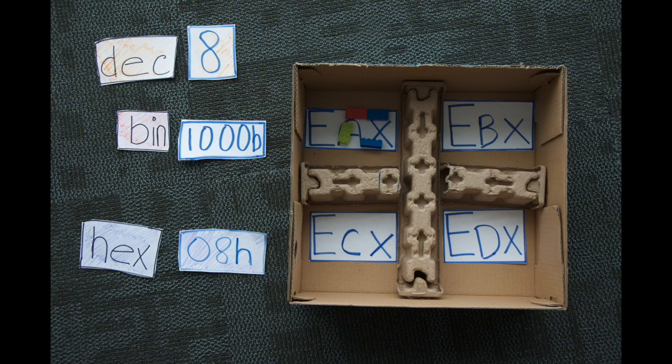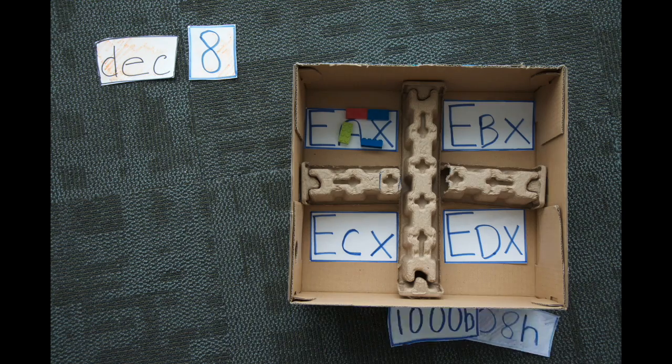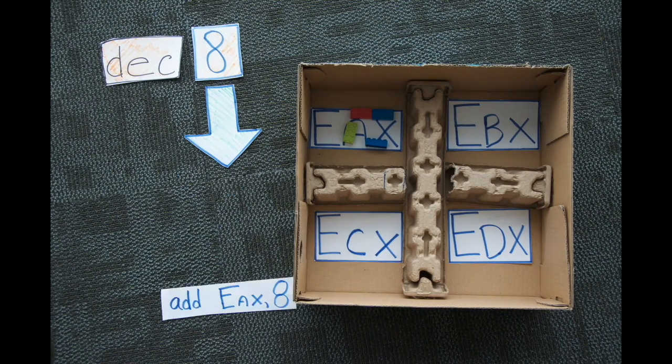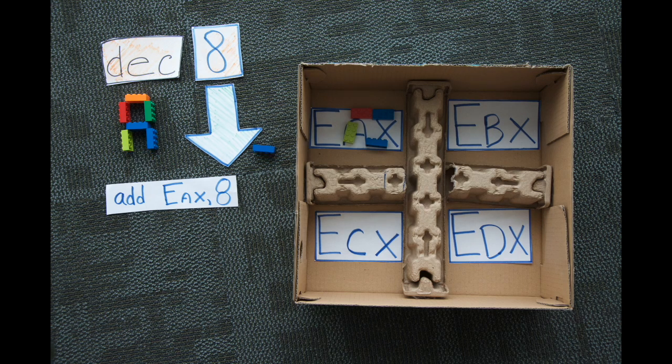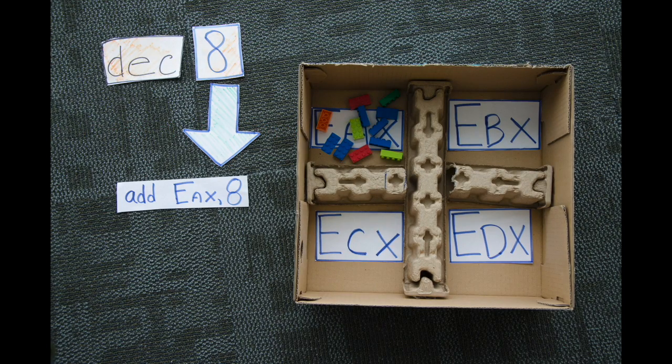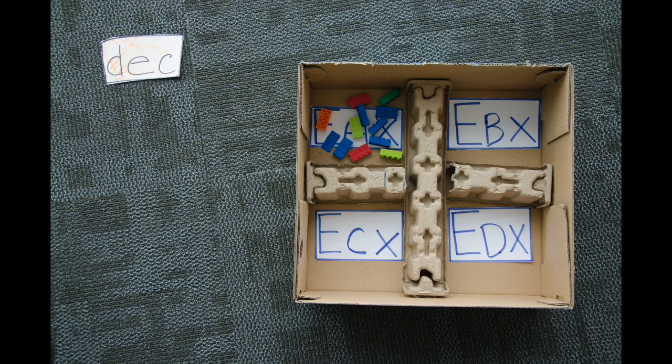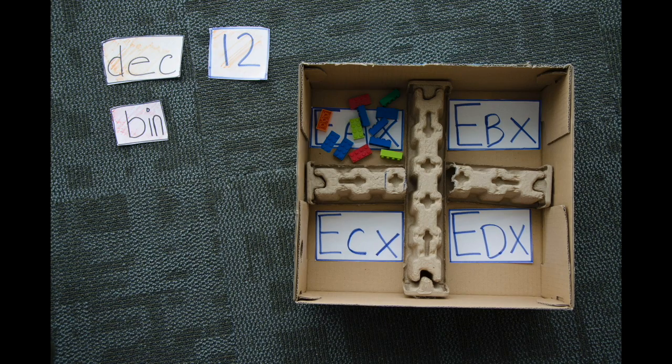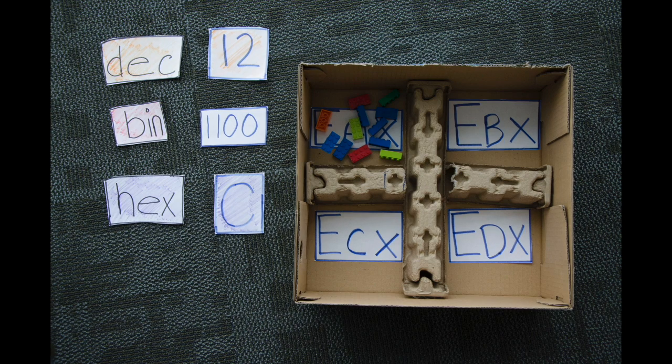So now let's go and add the decimal value of 8 to our register EAX. As we saw before, we can do this with the instruction, add EAX, 8. And this just means add the value 8 to the pre-existing value of our register EAX. Now, the value of our register EAX is 12. And we can see this written in our 3 different formats. In decimal, we have 12. In binary, we have 1100. And in hex, we have C.